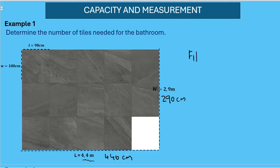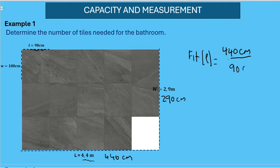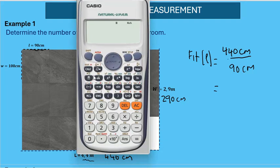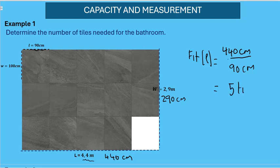We check how many tiles we can fit in length: take the length of the bathroom, 440 centimeters, and divide by the length of each tile, 90 centimeters, to see how many tiles fit in length. The result is 4.8888 recurring. We round this up immediately to five tiles.